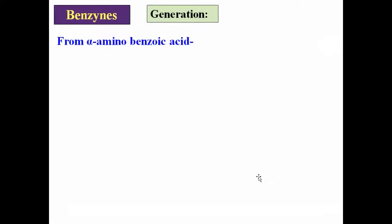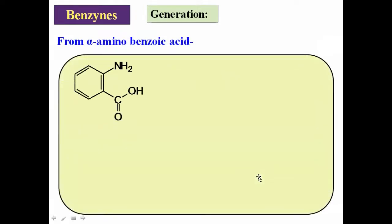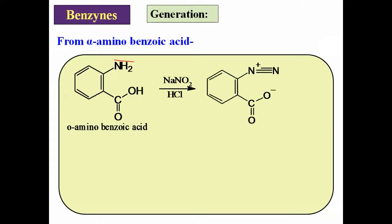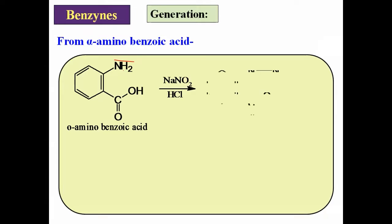Third method: from anthranilic acid (ortho-amino benzoic acid). This compound on reaction with NaNO2 and HCl at low temperature undergoes diazotization — the NH2 group converts into a diazonium chloride, giving a diazonium salt.